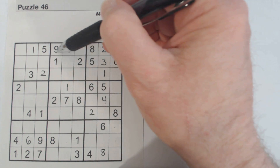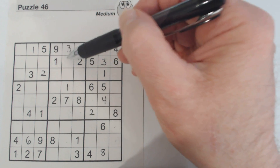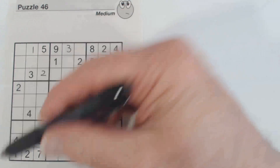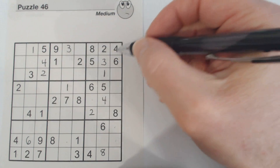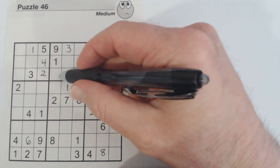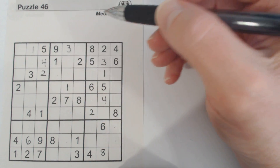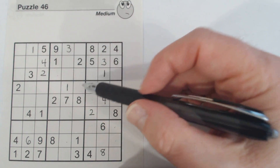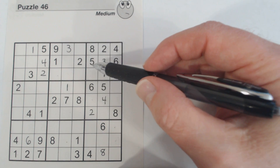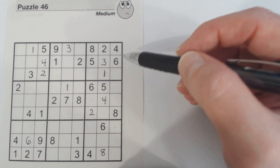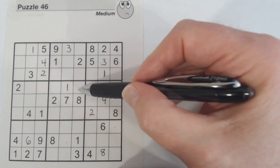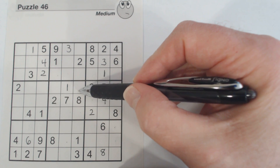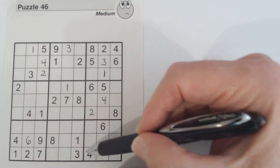For the 4s: checking each section — there's a 4 right there. One of these is a 4 but we can't solve that yet. Continuing through the 4s in remaining sections — working through all placements.